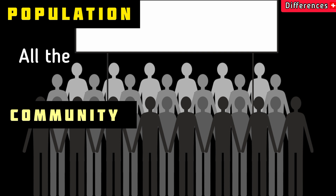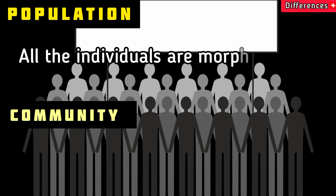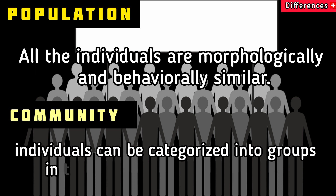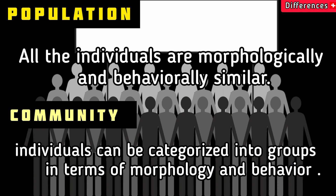In population, all the individuals are morphologically and behaviorally similar. In community, individuals can be categorized into groups in terms of morphology and behavior.